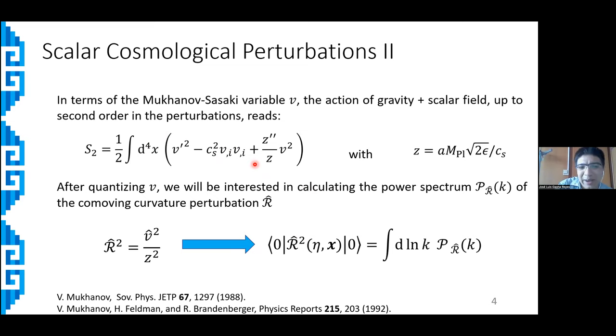Then one proceeds by quantizing it to define the corresponding conjugate momentum, and then the quantity of interest that we want to calculate is the power spectrum of the comoving curvature perturbation, which is basically proportional to the Mukhanov-Sasaki variable. This comoving curvature perturbation is a physical quantity that indicates the gravitational potential on surfaces of constant φ. In practical terms, what we need to calculate is the quantum expectation value of the square of the comoving curvature perturbation on the vacuum state, which will be the quantity related to the power spectrum.